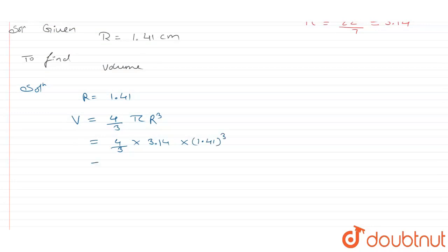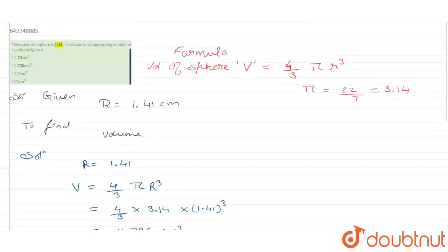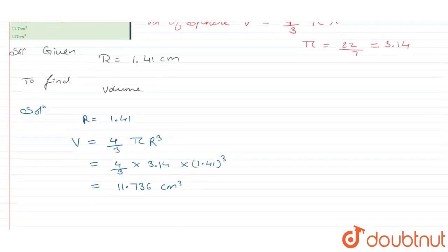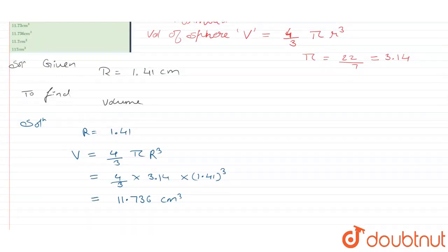When we solve this equation, we will get the value as 11.736 cm³. Since we have been asked in the question to calculate its value in an appropriate number of significant figures, and we have been provided the radius in 3 significant digits, we will calculate it up to 3 significant figures.